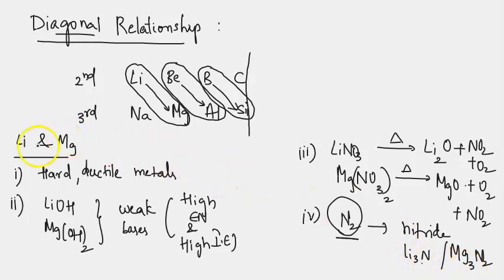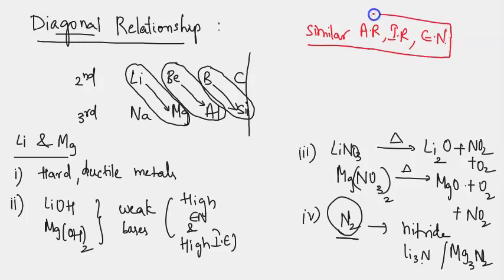This similarity in lithium and magnesium is observed, though they belong to different groups, because of their similar atomic radius, similar ionic radius, and similar electronegativity. These are the three main factors resulting in similarity between lithium and magnesium.